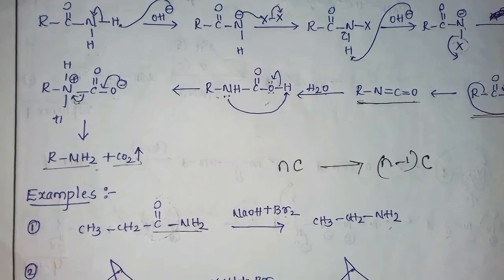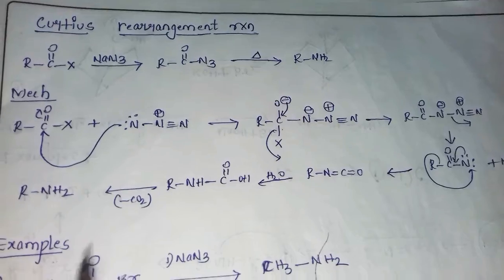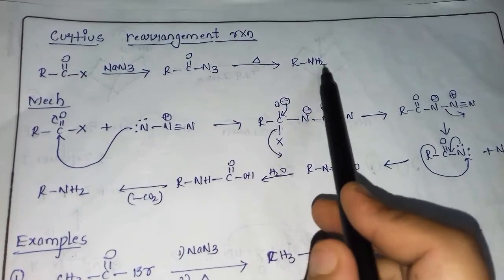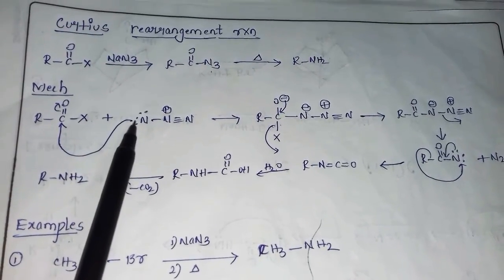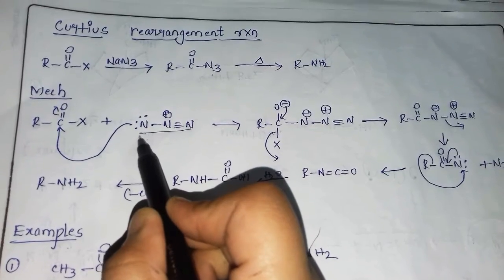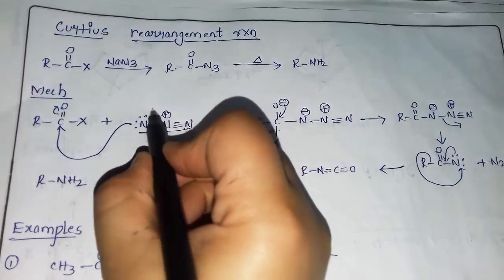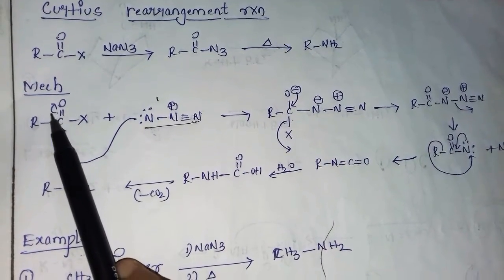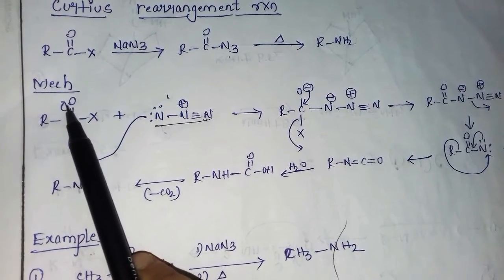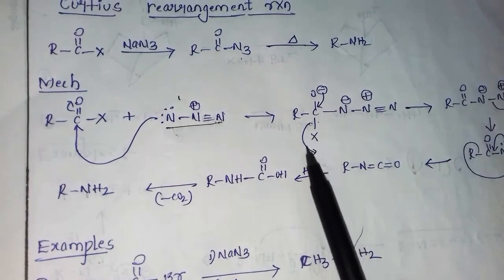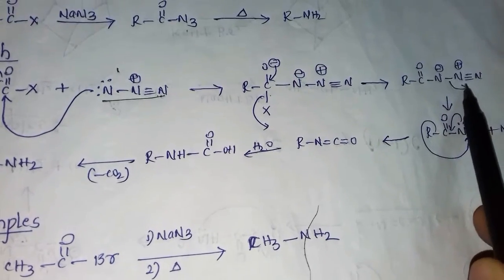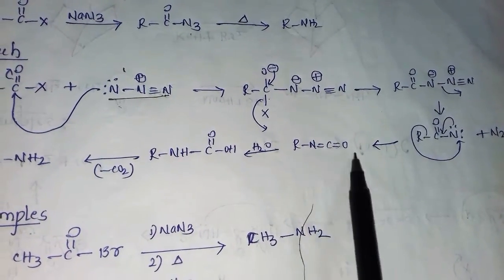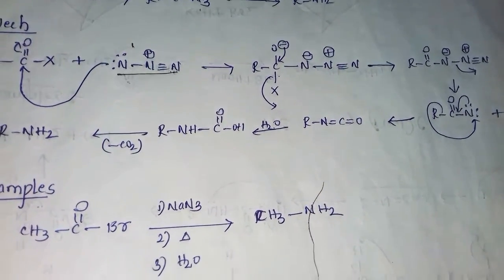Now for the Curtius rearrangement mechanism. We take acyl halide with NaN3 — which gives Na+ and N3− — to form the acid azide. The N3− attacks the acyl halide, a bond shifts to oxygen giving a negative charge, and then the group migrates. The bond going one way creates a positive-negative pair that neutralizes to give acyl nitrene with loss of N2, then isocyanate, then with water — same as Hofmann — we get the primary amine.